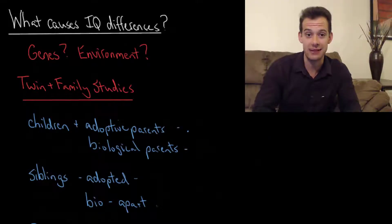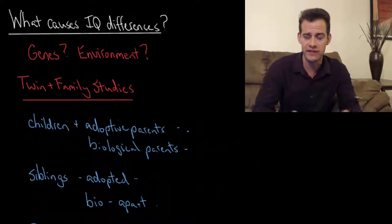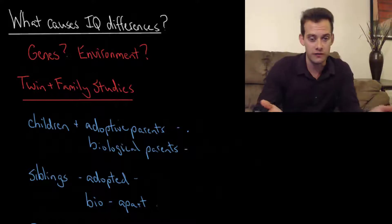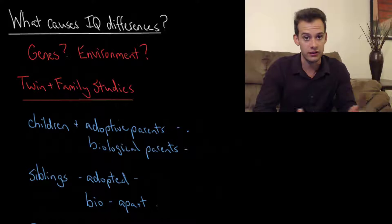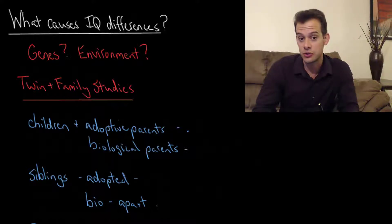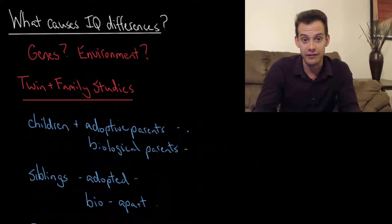I'm Michael Corayer and this is Psych Exam Review. In this video we're going to try to address the question of what causes IQ differences. In the previous video we talked about IQ variation and we saw that IQ varies — people have different IQ scores. We saw the distribution of all those scores across the population. So now we might ask what's causing those differences? How much is due to the fact that people have different genes and how much is due to the fact that people have different environments?